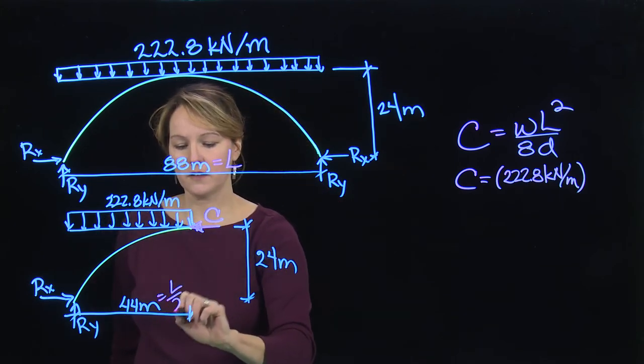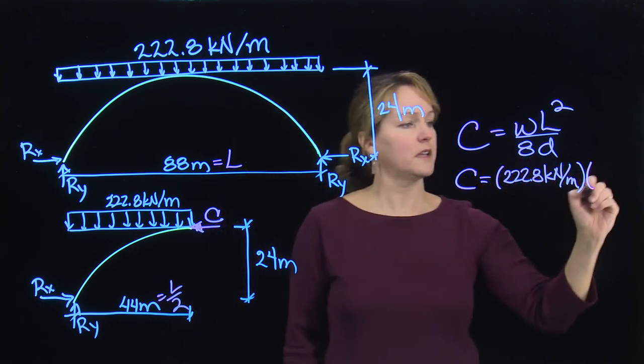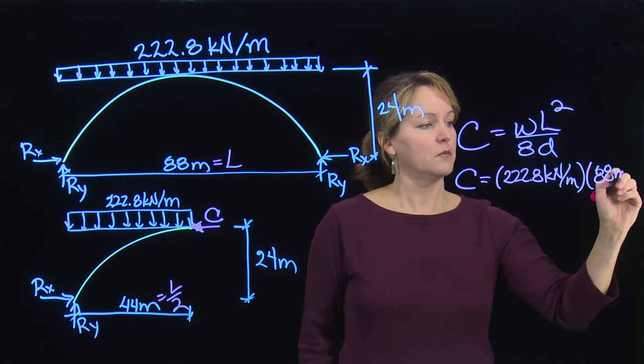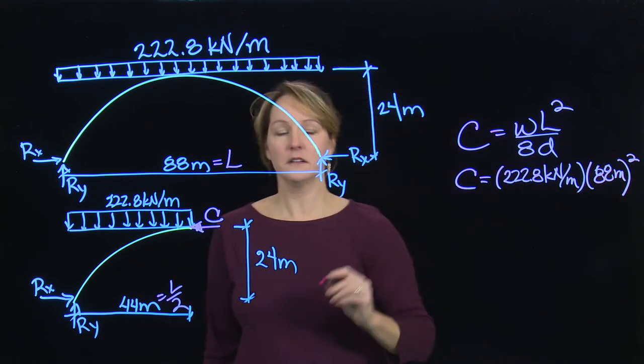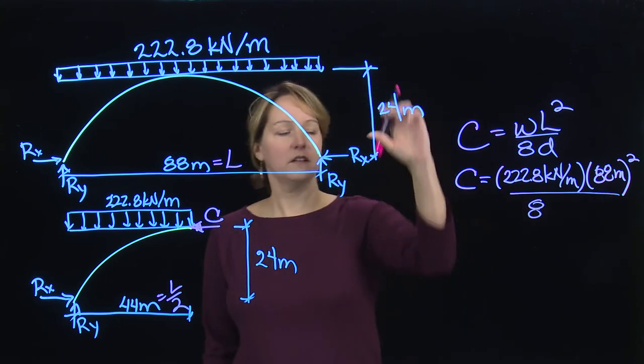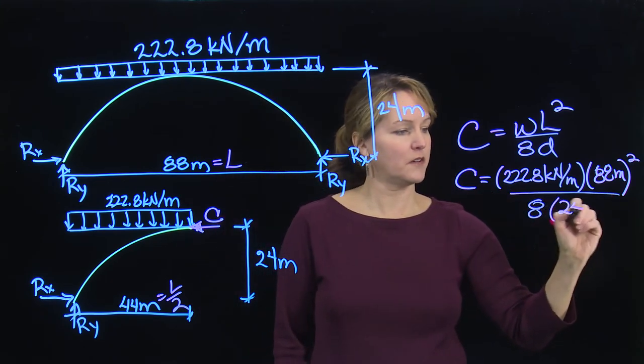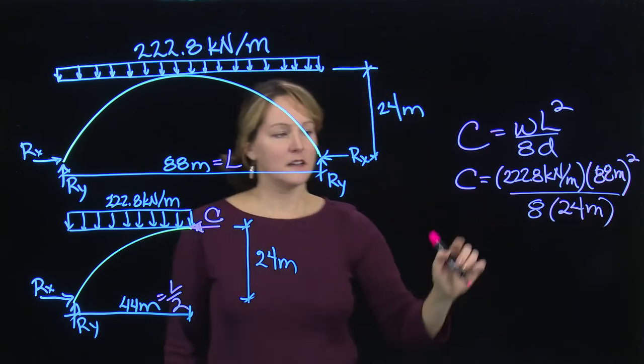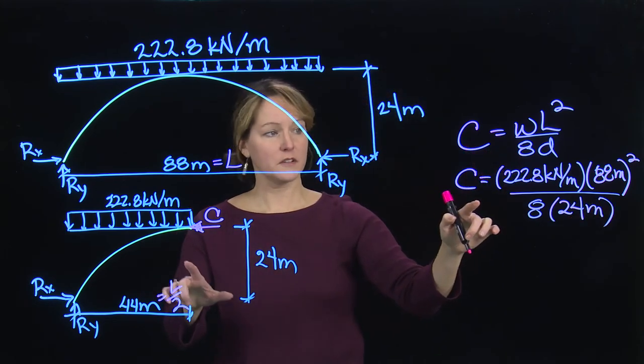This value down here is L over 2, so my length will be 88 meters, and that's squared. If I divide by 8 and the depth—the depth in this case is 24 meters—that's going to allow me to compute the compression force in the arch.